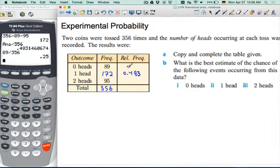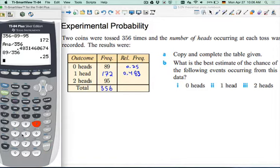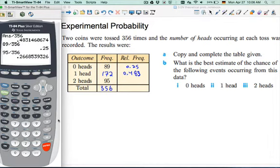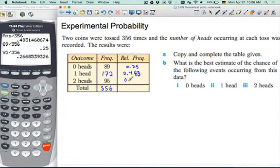Wow, you don't get much better than that. Okay, and finally, 95 divided by 356 equals 0.267.